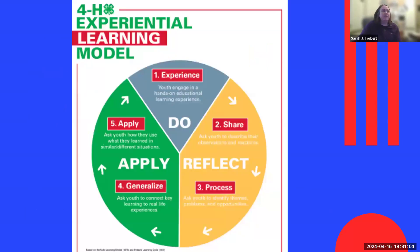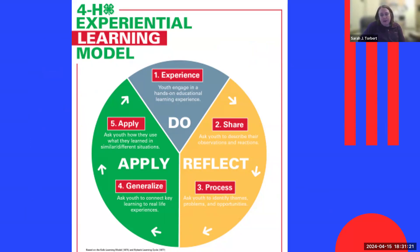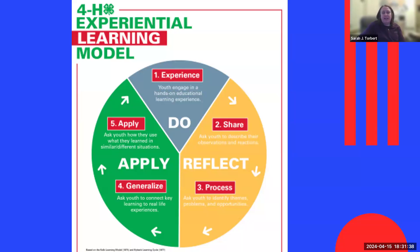Our topic is helping 4-H members reflect. Hopefully at some point all of you have seen this — we talk about it in new leader training and sometimes in other aspects of the 4-H program. What makes our program different or unique from other youth experience programs is that we are research-based, and one of the research models we use is called the experiential learning model. It is divided into three parts — the do part, the reflect part, and the apply part — and then further into five additional parts.